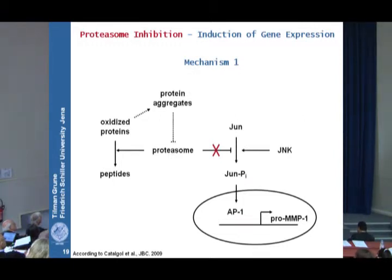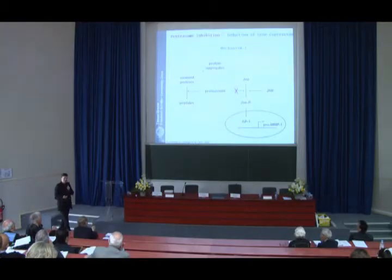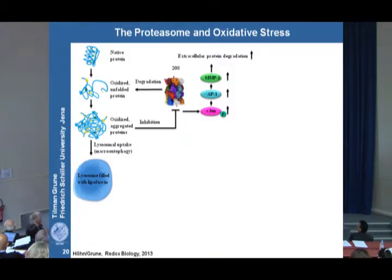So proteasome inhibition — blocking the metabolic pathway — may actually induce or contribute to several processes. That got us interested: perhaps there are other genes also induced when you block the proteasome.